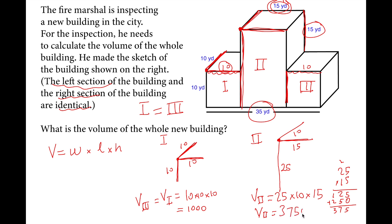Total volume now I can add them up. It will be 1000 plus 3750 plus 1000, which makes 5750 as the result of this problem.